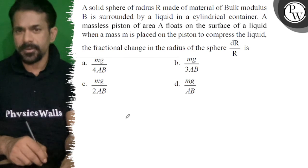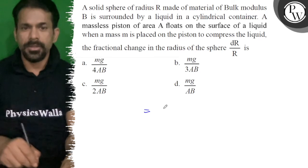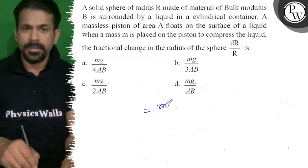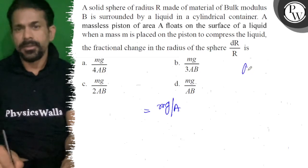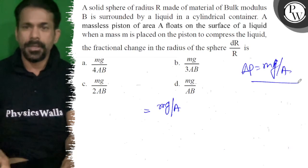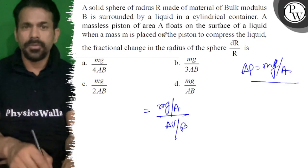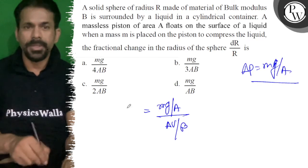The fractional change in the radius of the sphere. So the pressure generated will be mg by A. This pressure will be del P equals mg by A, divided by del V by V, and that equals beta.